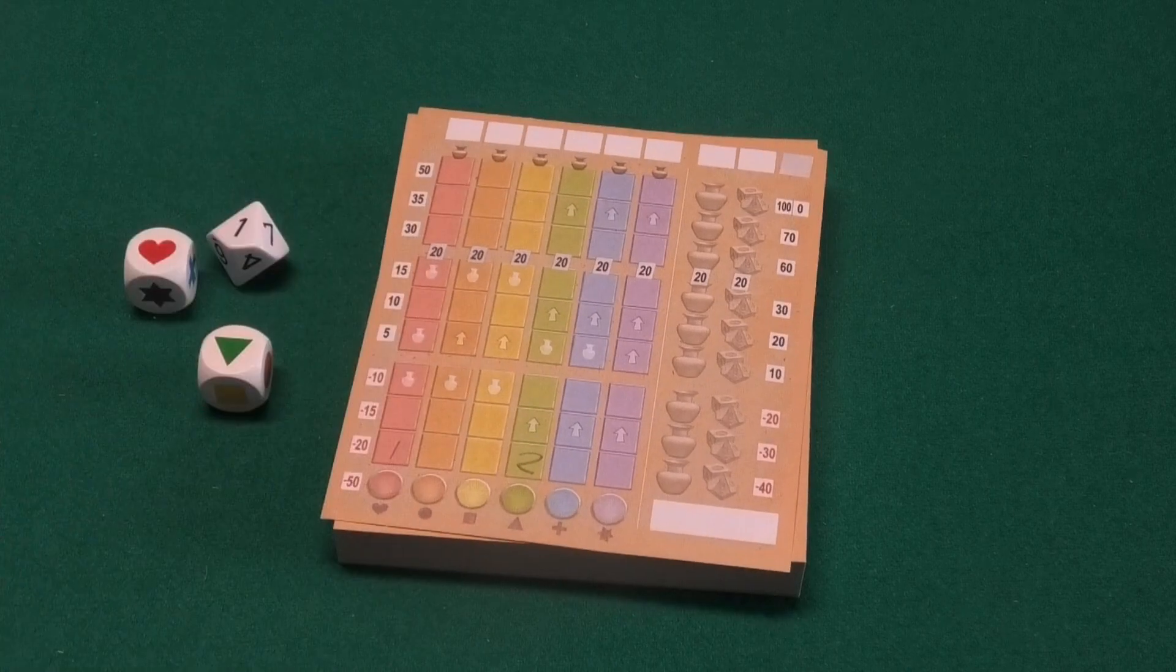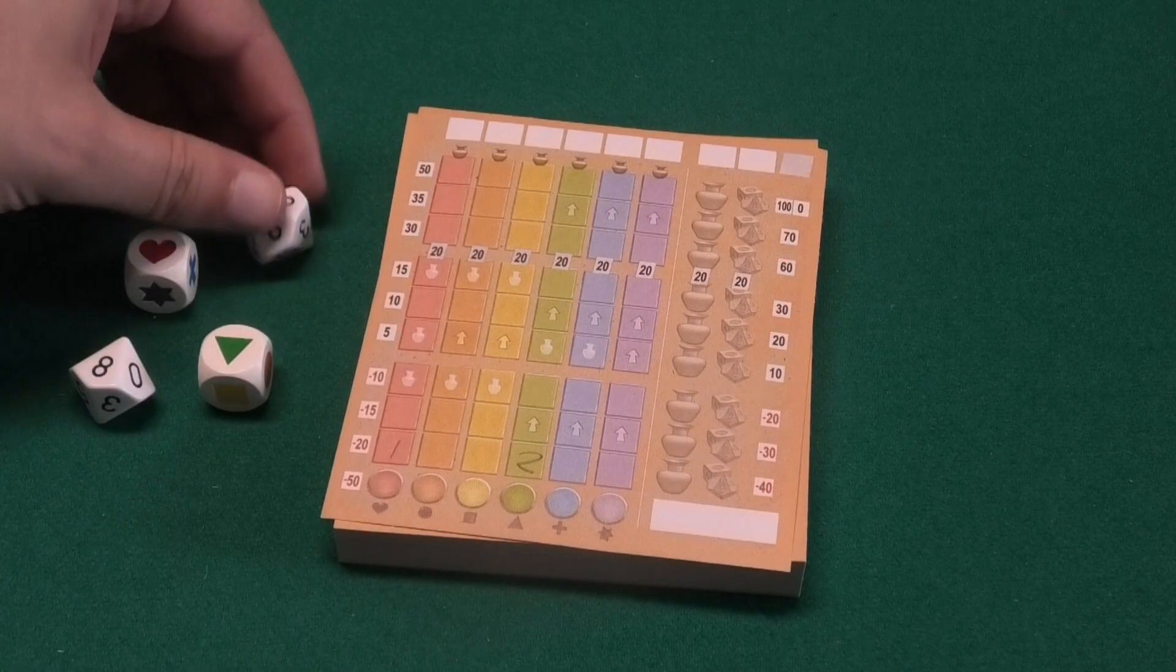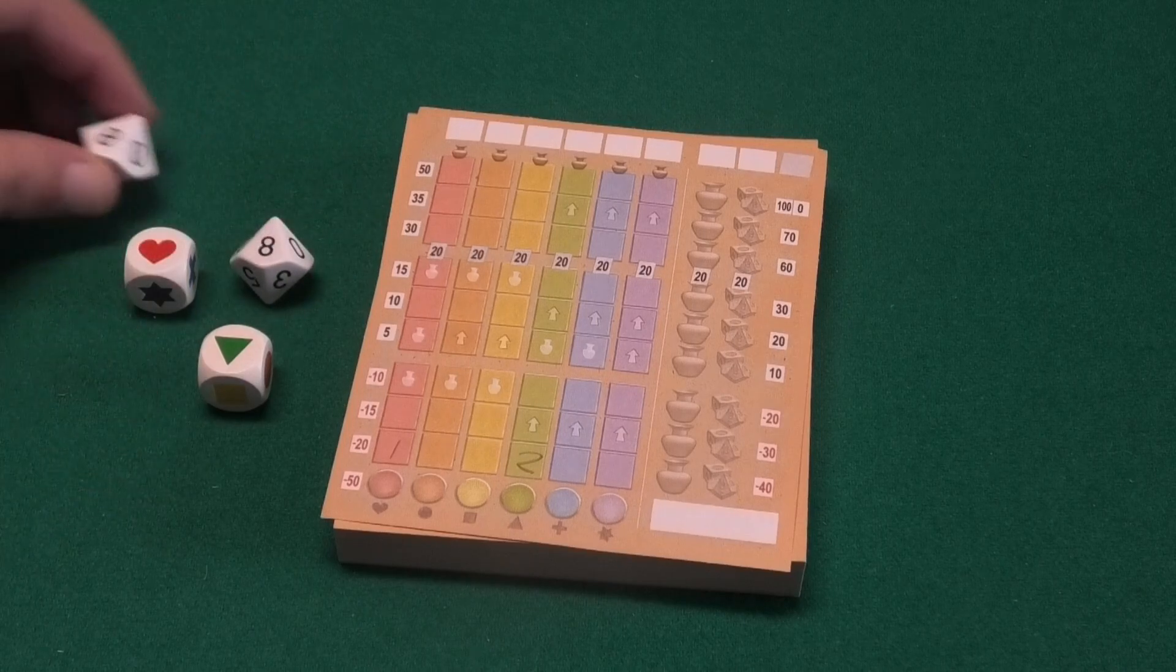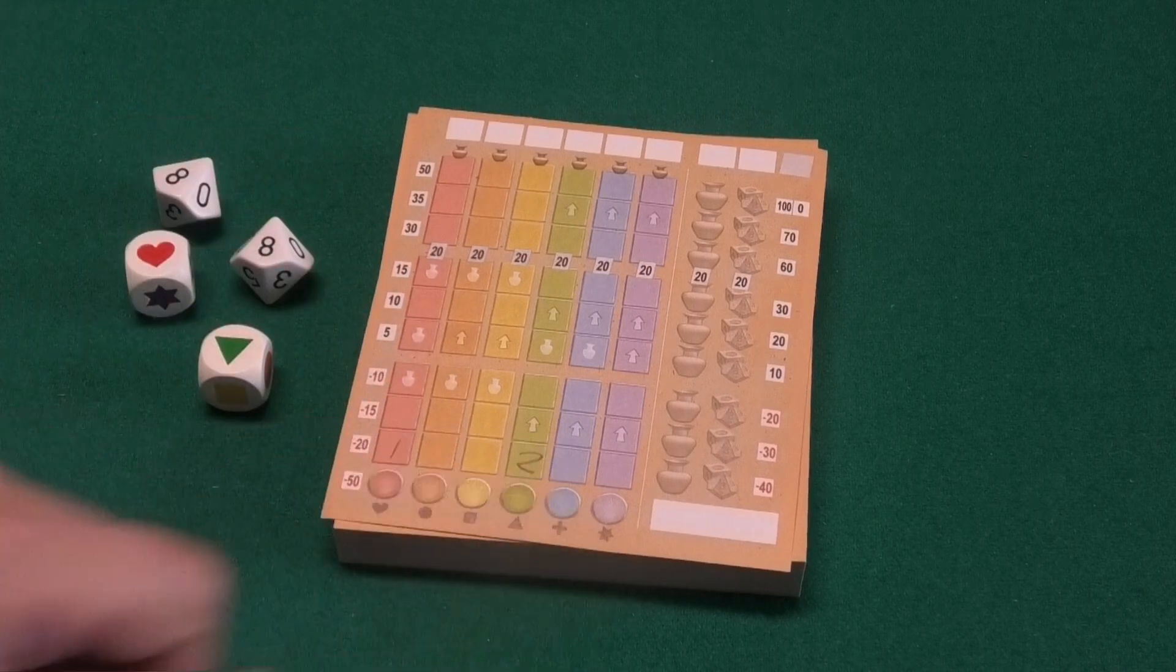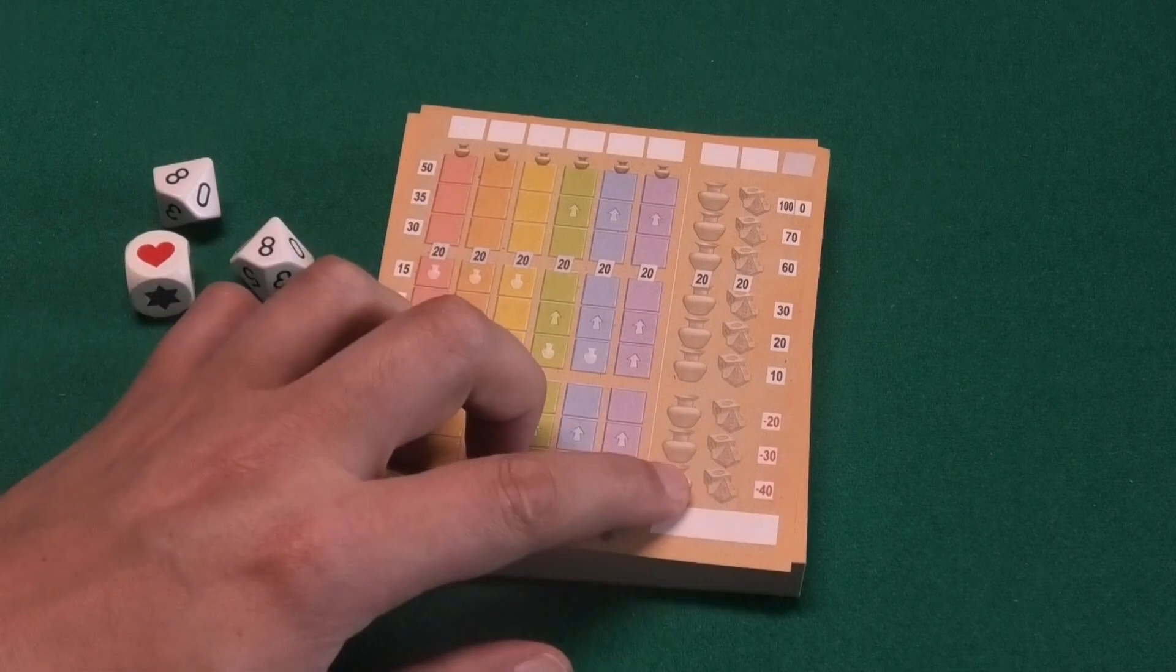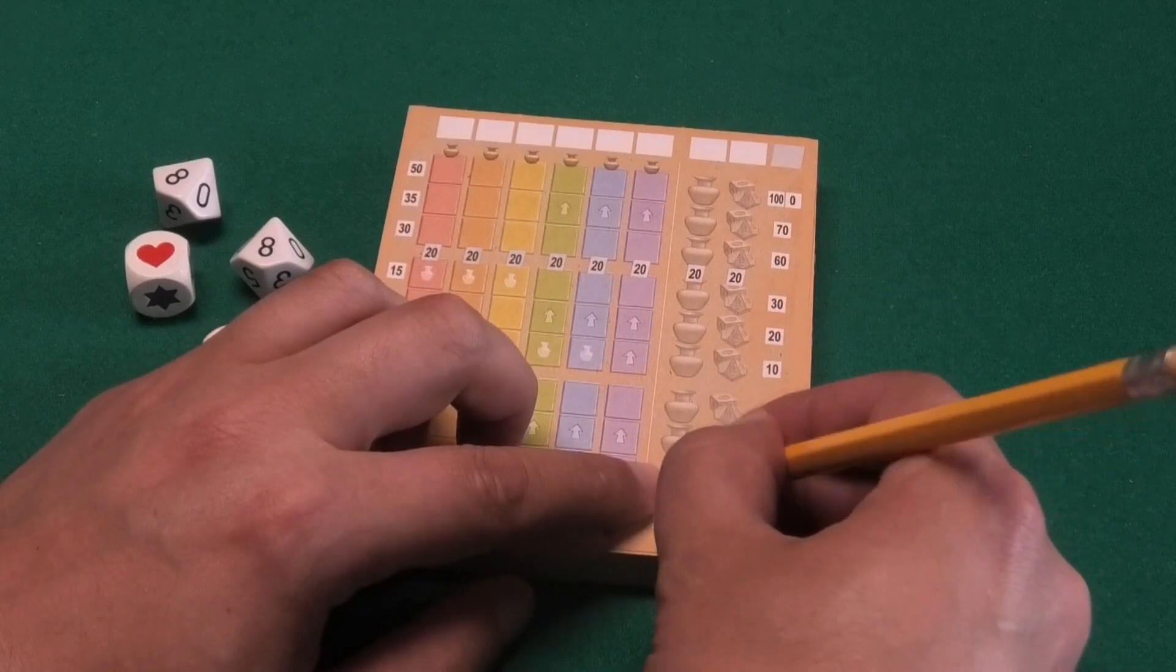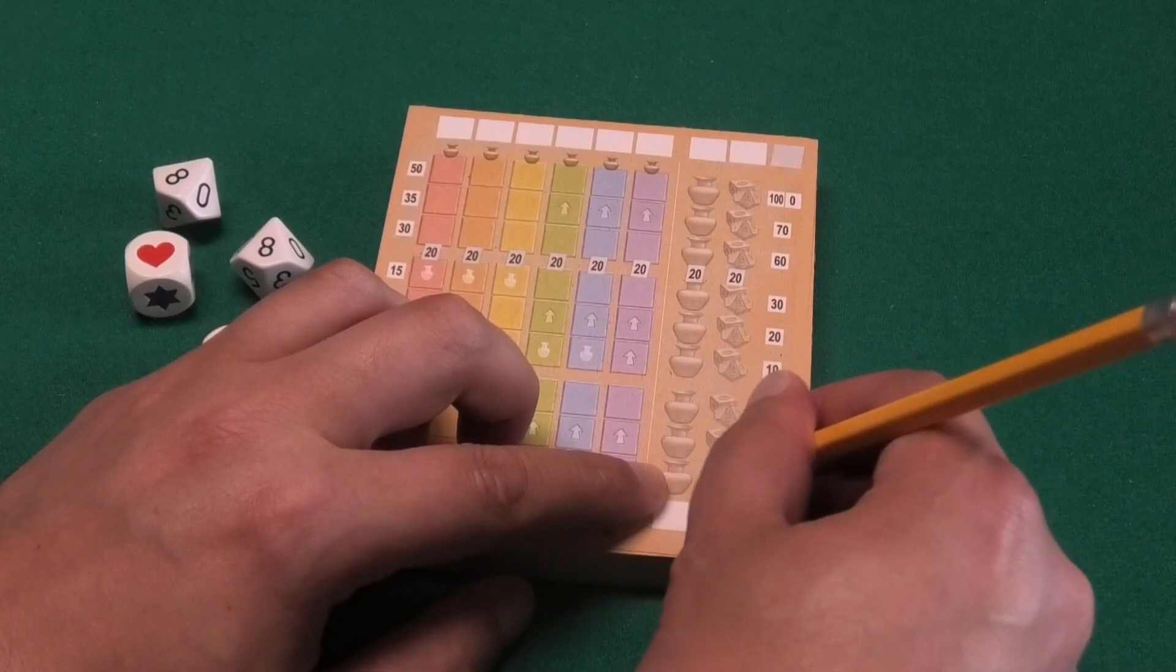You're also allowed to not take any dice. Say there are two number eights and we don't want that as our first number. Of course, then we say I passed, I don't want any dice. But then we have to cross off one of the dice symbols over here, starting also going from bottom to the top.